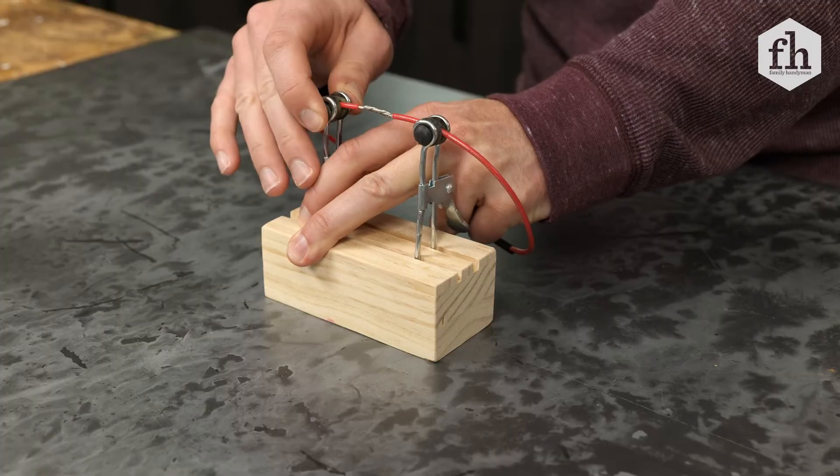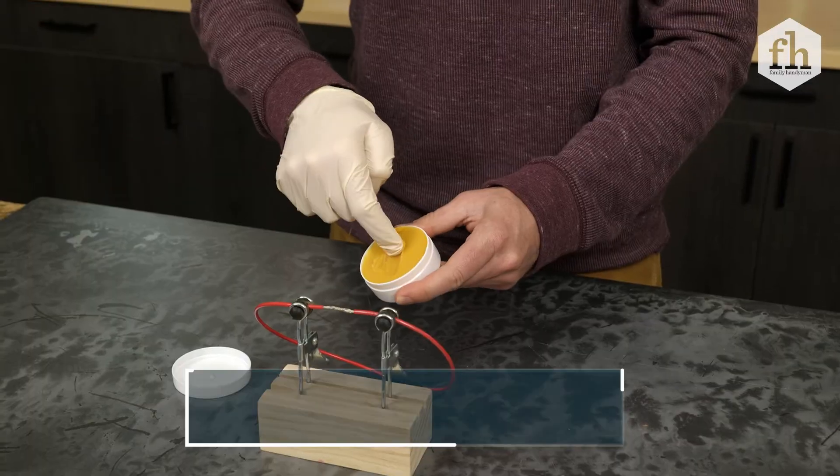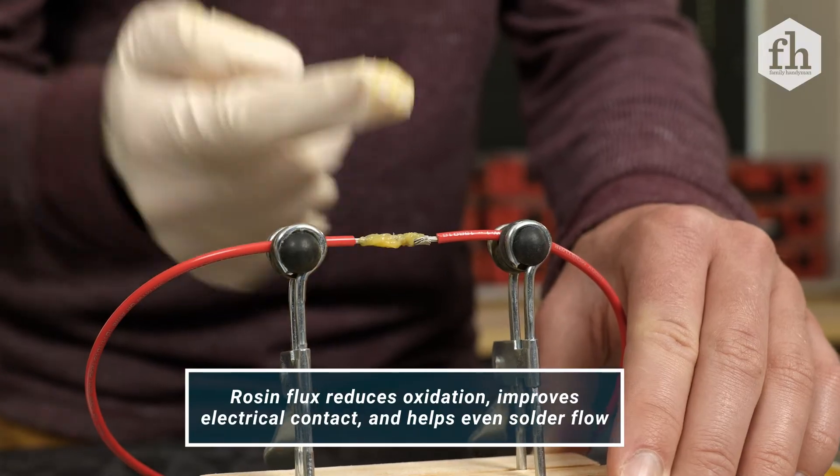Place wires into a helping hands clamp and with latex gloves on, completely cover wires with rosin flux.